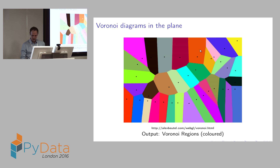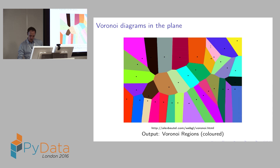For every point in the plane the Voronoi diagram tells you what generator point is closest to you. If you are near a tube station in the orange shaded region, that is exactly the region where that tube station is closest. The Voronoi diagram gives you a partition of the entire plane into these regions of closest distance to the tube stations. The colors here are chosen randomly.